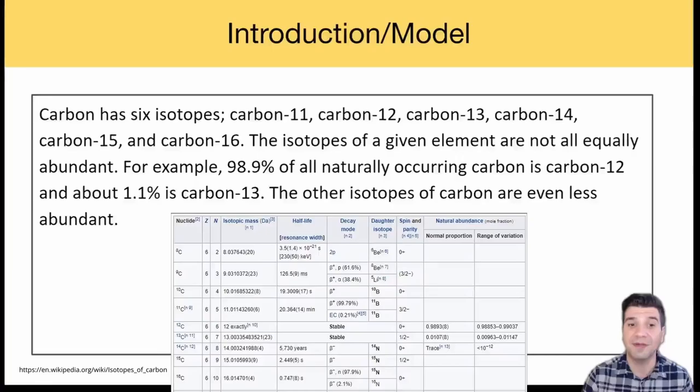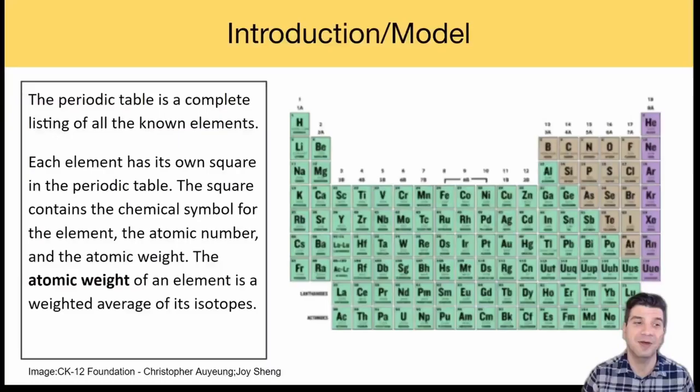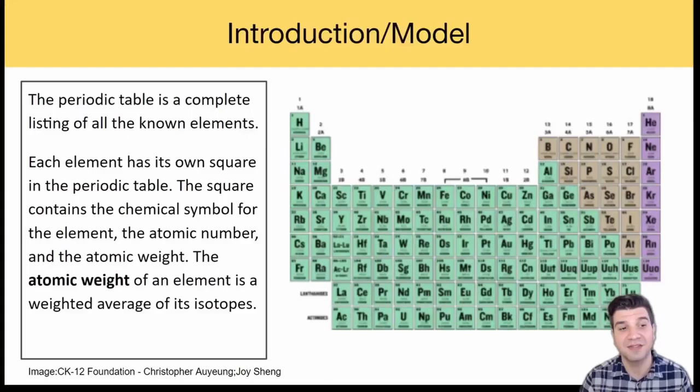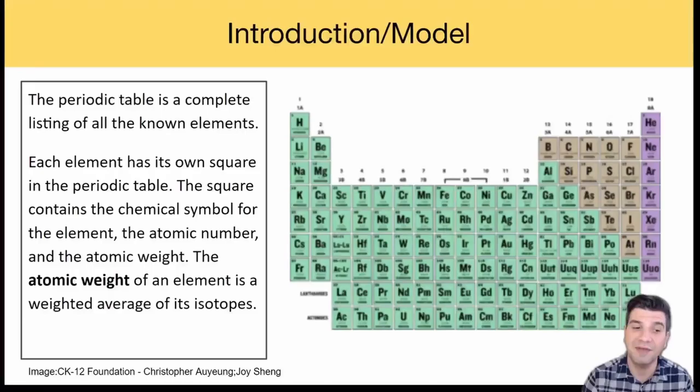Just like hydrogen, carbon has some isotopes too. In fact, carbon has six of them: carbon-11, carbon-12, 13, 14, 15, and 16. The isotopes of a given element are not all equally abundant. For example, 98.9% of all naturally occurring carbon is carbon-12, and about 1.1% is carbon-13. The other isotopes of carbon are even less abundant.